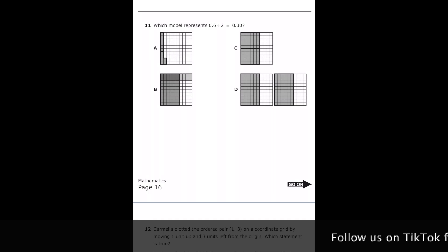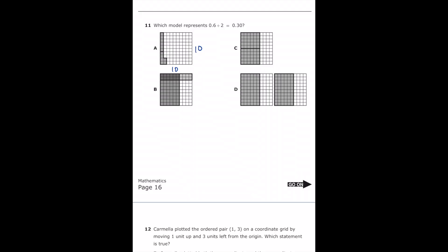Number 11, which model represents 0.6 divided by 2 equals 0.30? So all these answer choices have a 10 by 10 grid. So we know that each row or each column is going to be in tenths, right? So like this whole column right here would be 0.1 and so forth.